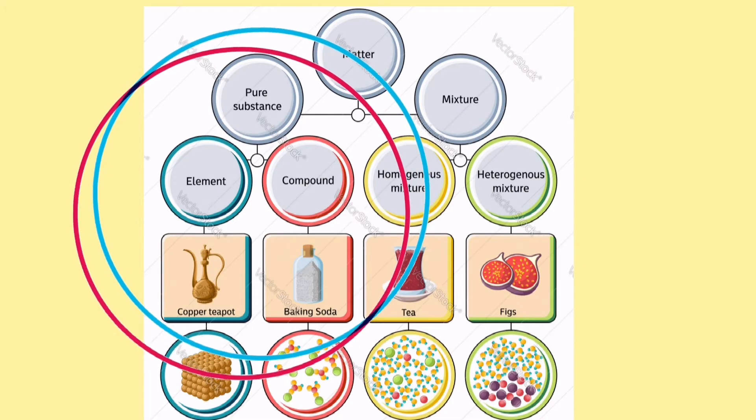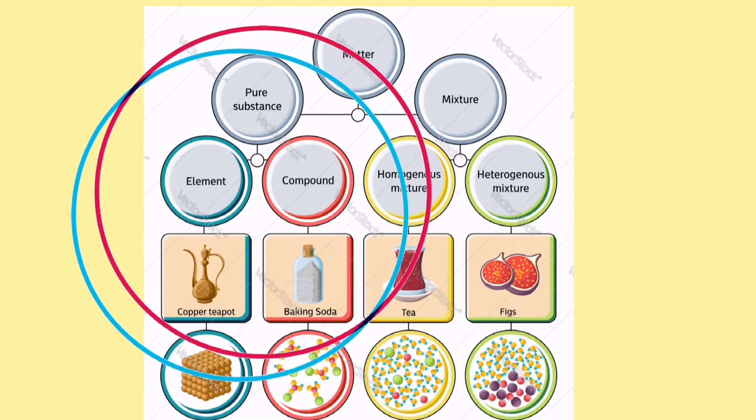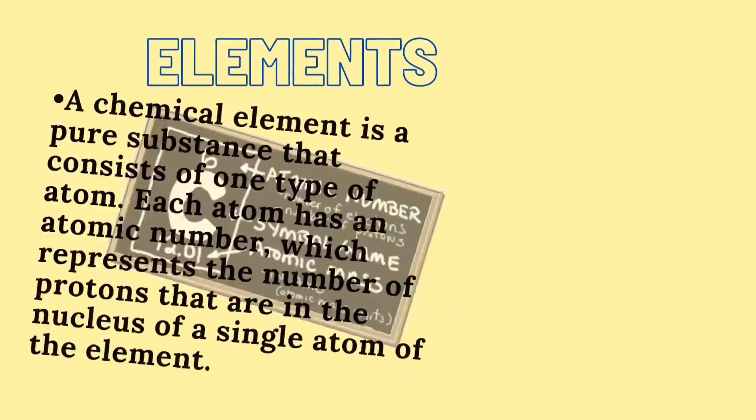Any pure substance is composed of one type of atom or molecule, whereas mixtures are composed of different types of atoms or molecules that are not chemically bonded.